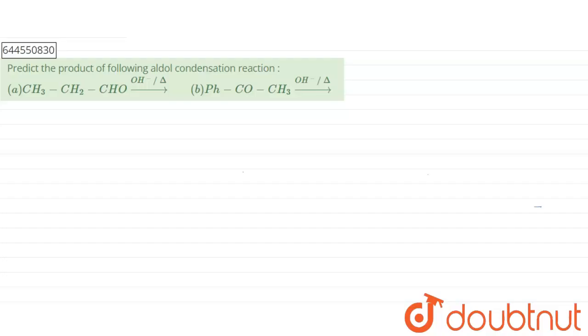have asked us to predict the product of the following aldol condensation reaction. So for the aldol condensation reaction you should know that we have two conditions: first one is we should have aldehyde or ketone present. This is the reaction of aldehydes and ketones and second we should always have minimum of one alpha hydrogen.